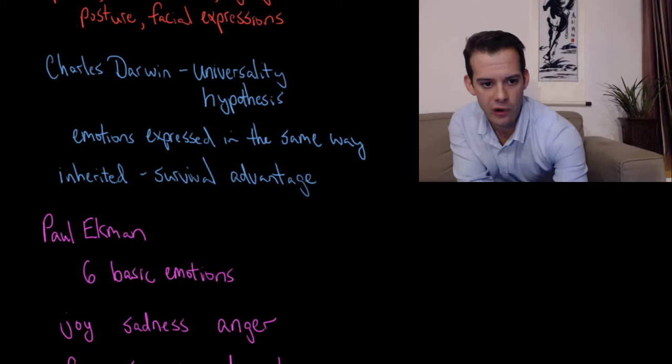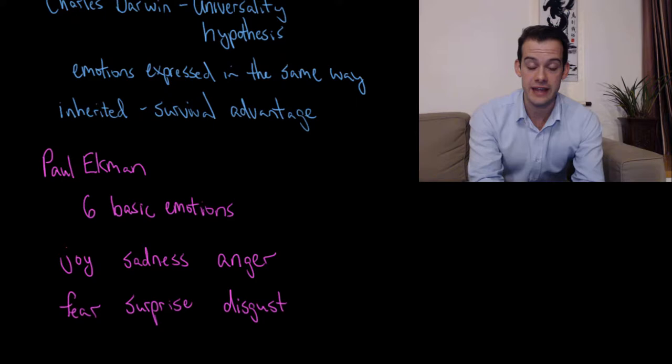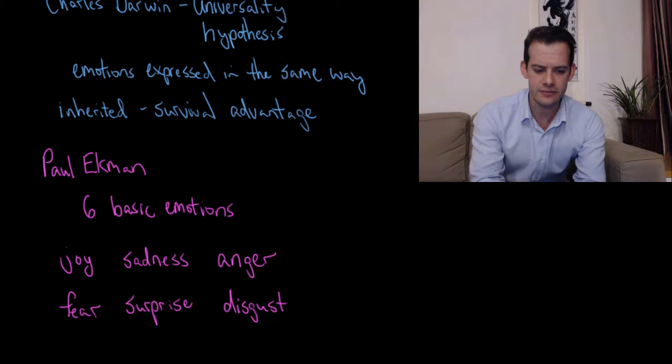Now in the 1960s, Paul Ekman did some research supporting Darwin's view and suggesting that it wasn't about learning and it wasn't about the society that you were raised in. It was universal. And he thought that there were six basic emotions that people all over the globe could recognize and could express.